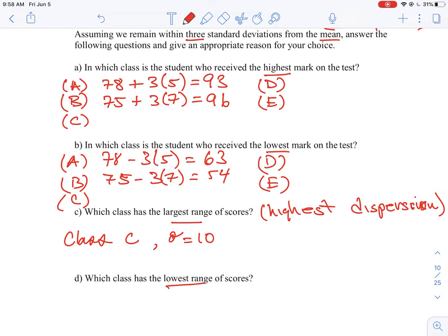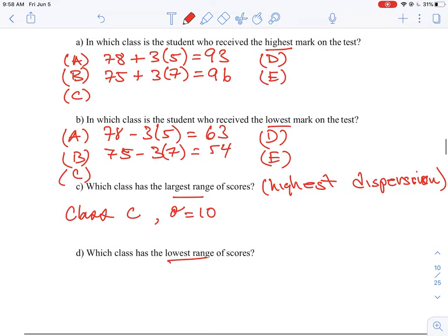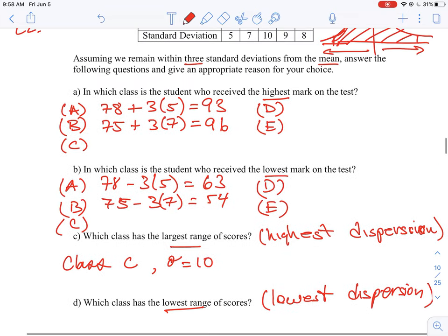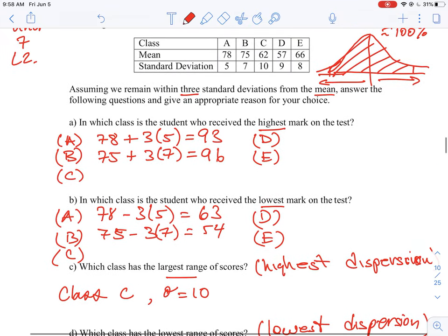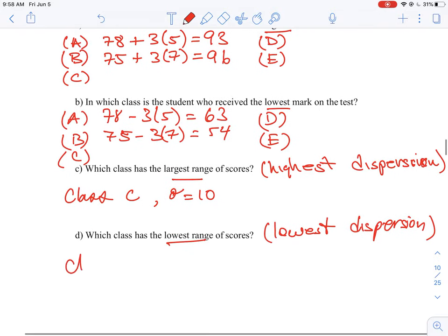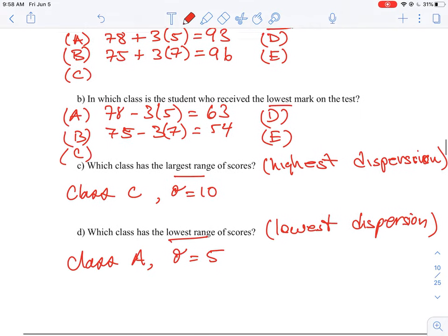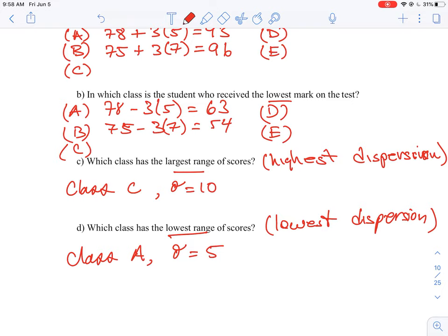And then the lowest range is just going to be the opposite. It's going to be the lowest range or the lowest dispersion. So the lowest dispersion is equal to the value of the class where we have the lowest standard deviation. So in this case it's class A, because sigma in this case here is 5. That means that all the data points are very close together as compared to class C.